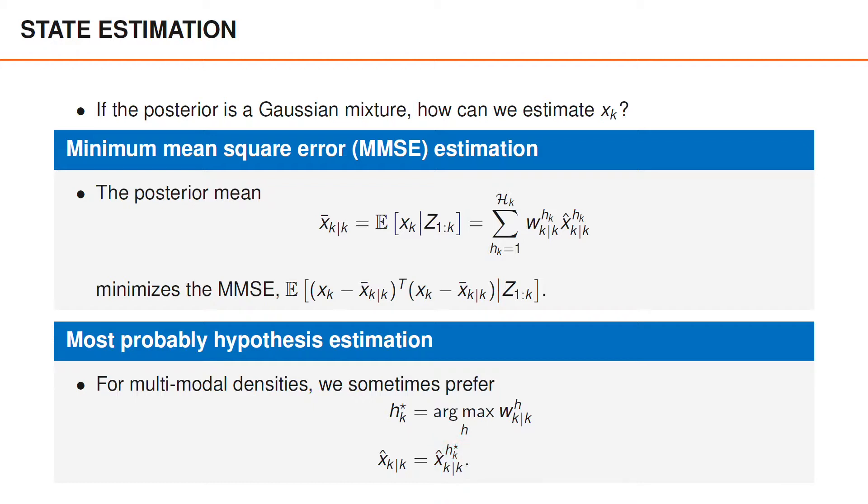In many cases, this estimator yields estimates in regions where the density takes larger values compared to the posterior mean. We note that both estimators are identical if the posterior is not a mixture but a single Gaussian density.